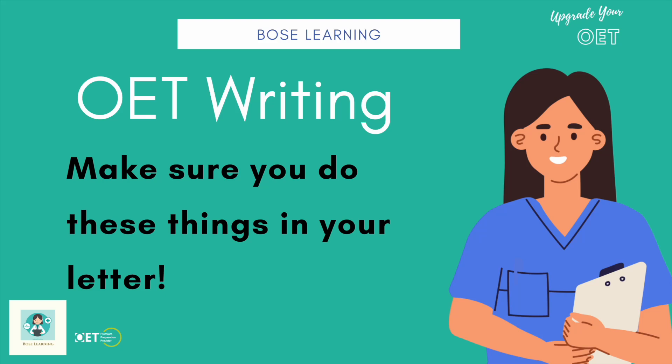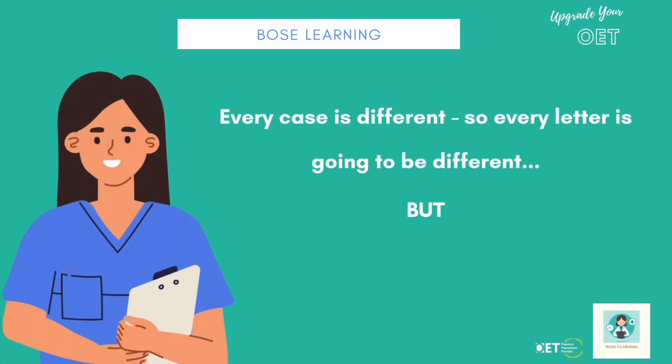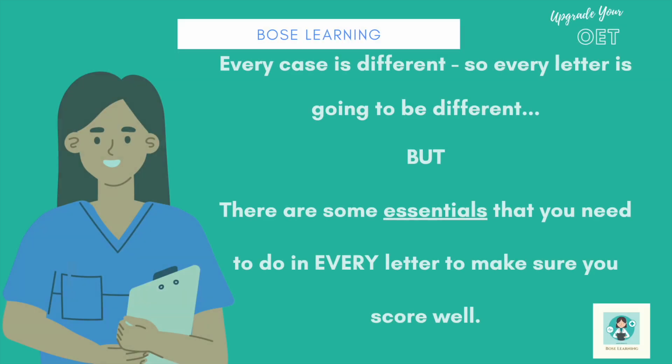Hello there. In today's video I want to go over six things that I want you to make sure you do in your OET writing in order to score well. Every case is going to be different because every patient is different — we're never going to get two that are the same, so every letter is going to be different and there's no point trying to have some kind of template that you can just churn out for every single letter. However, there are some essential things that you need to do in every single letter just to make sure you score well and that you are ticking those criteria boxes.